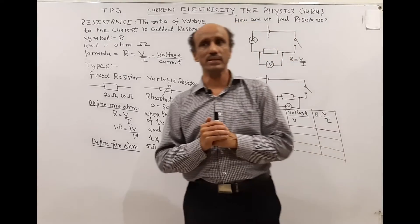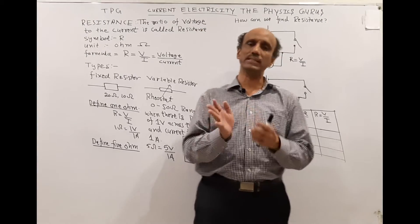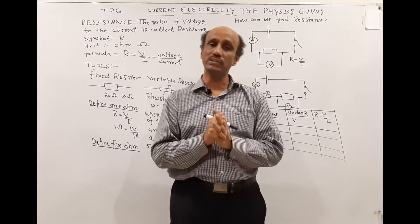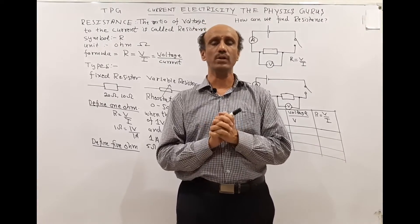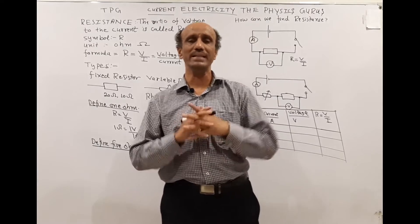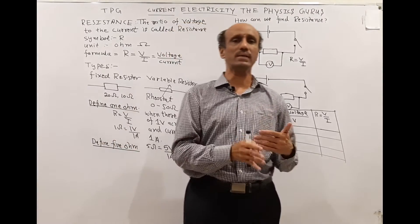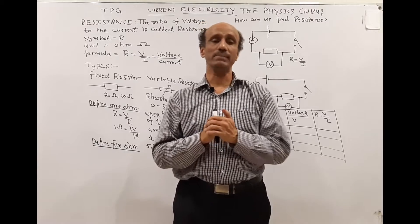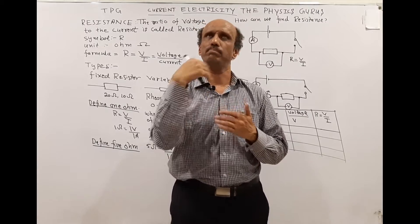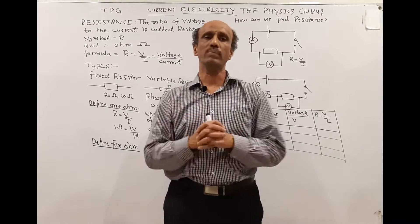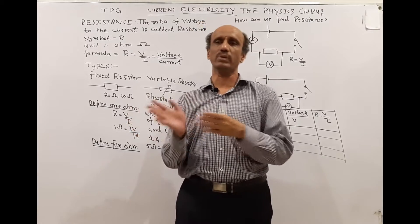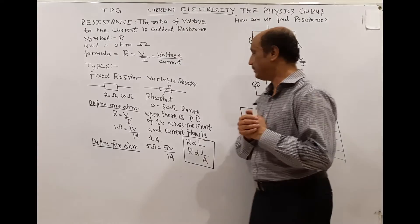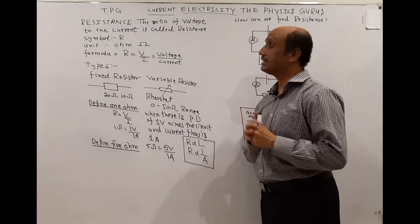The next topic related to current electricity is resistance. Resistance is essentially the opposition to the flow of electrons. In a good conductor, the flow of electrons is very smooth — free electrons easily move from one place to another. In a poor conductor, there is a hurdle in the flow of electrons, and they cannot pass quickly from one place to another.